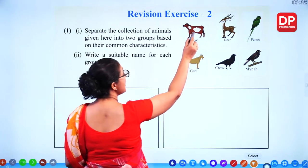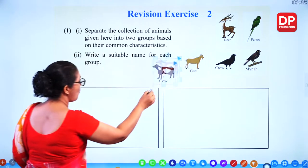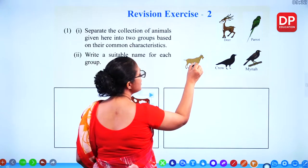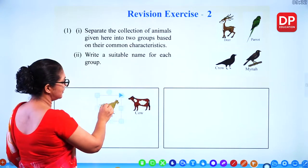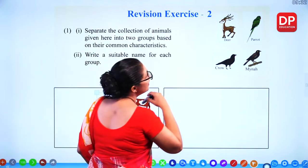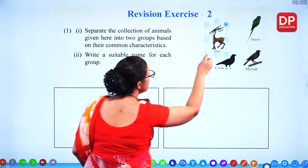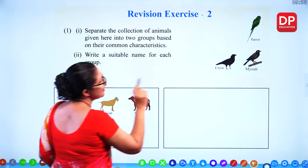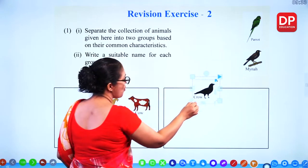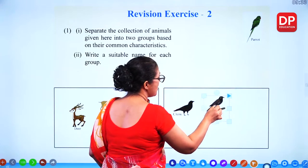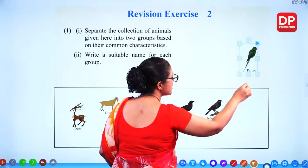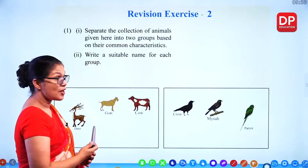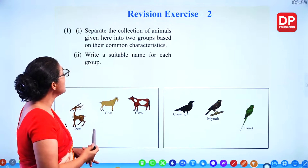We will take cow into one group, and take goat to the same group and deer to the same group. What about the other three pictures? Crow, mina, and parrot. So these form two groups, and we have to now give a name.